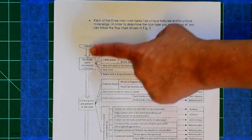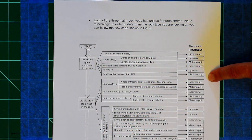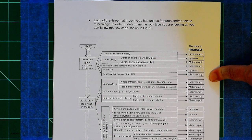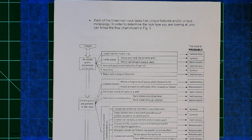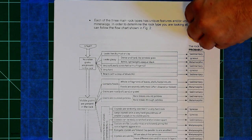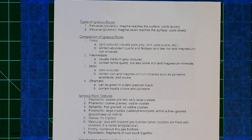This flow chart you can work through and it will tell you what rock type you're looking at. However, all the rocks in today's lab are going to be igneous, so you don't need to use that.